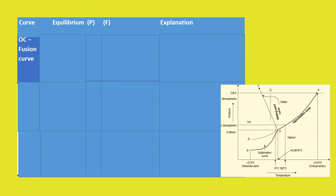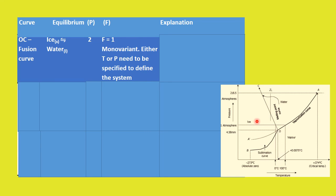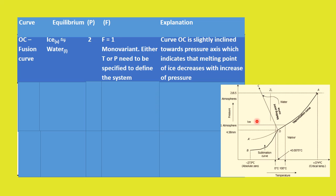Now let us see curve OC, the fusion curve. Here ice and water are in equilibrium. Phase is again 2 and degrees of freedom is 1 — the system is monovariant. Curve OC is slightly slanted towards the y-axis and has a negative slope. This means that on increasing the pressure, the melting point of water decreases, as seen by the fall in temperature.